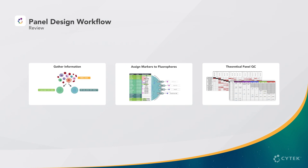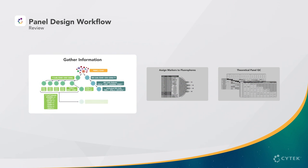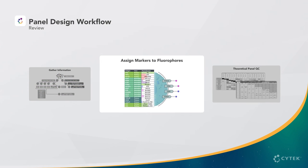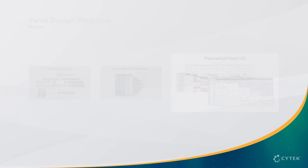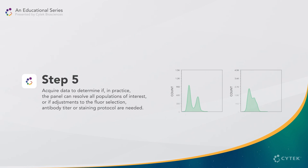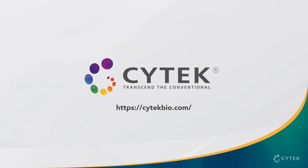To summarize, we have used all the best practices we have learned so far to design a theoretical panel. After gathering as much information as possible about our markers and fluorophores, we can assign the markers to fluorochromes, and then perform a theoretical panel QC using the panel and SIR matrix. The next video will cover the final stage of panel design, which is panel optimization. In this critical step, you will acquire data to determine if, in practice, the panel can resolve all populations of interest, or if adjustments to the fluorochrome selection, antibody titer, or staining protocol are needed. Visit SciTech's Spectralearn Educational Portal to learn more on this and many other topics.